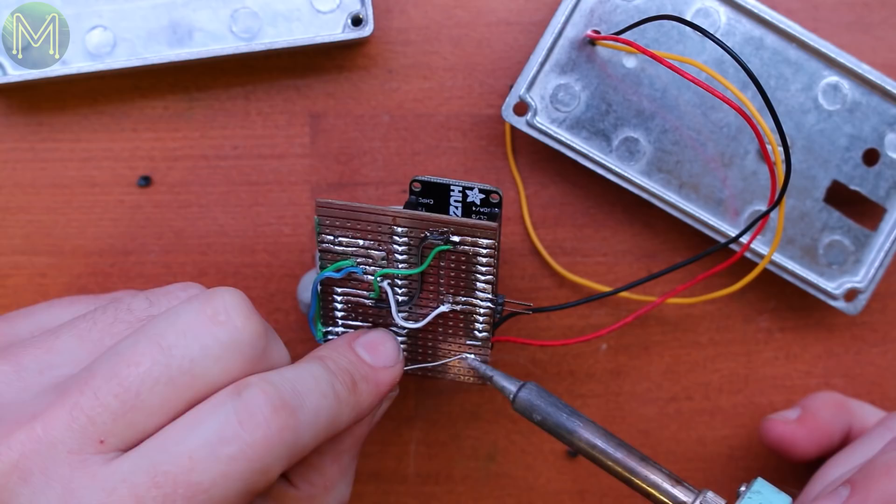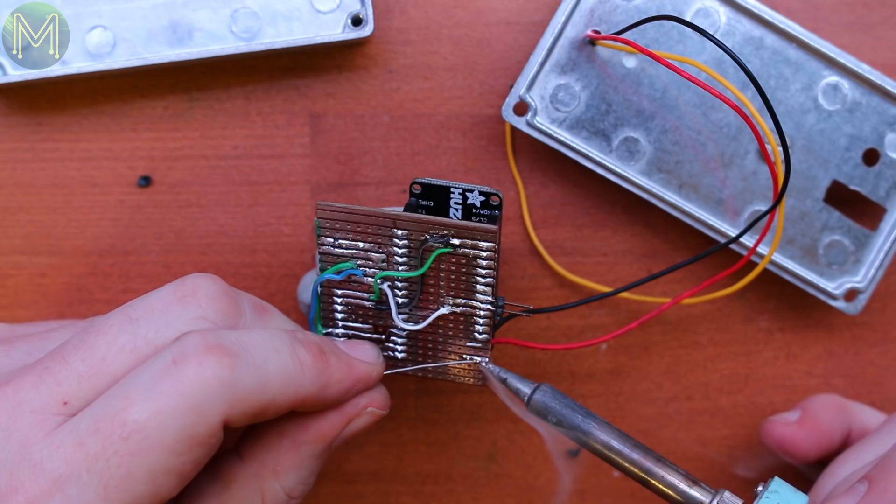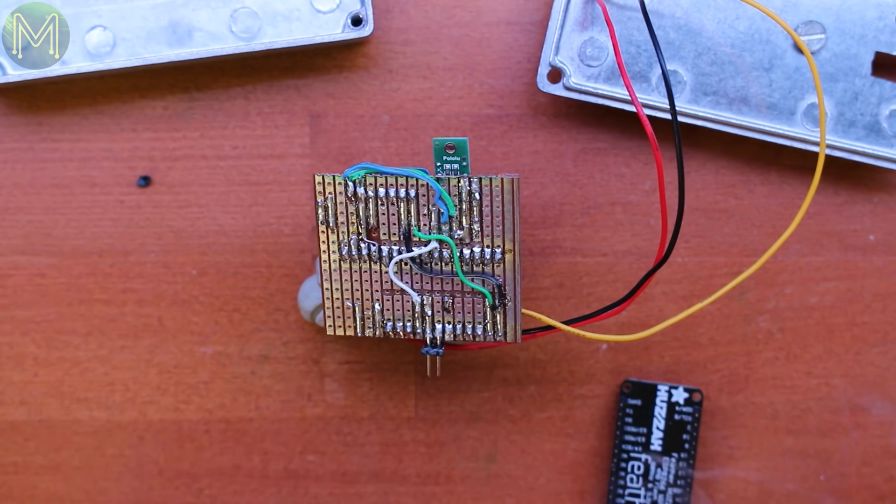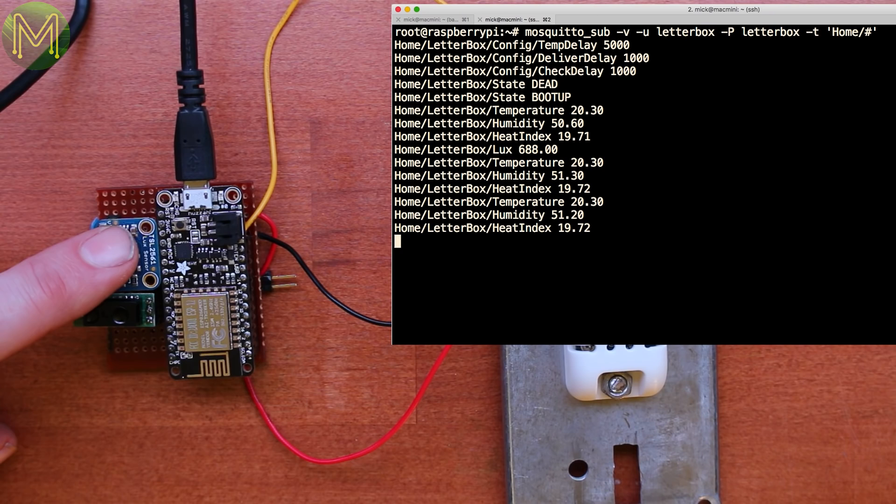Next I'll drop the power and ground for the sensor. And finally the sensor output to GPIO 0 of the ESP. I moved it to GPIO 0 because the lux sensor is now using GPIO 4 as SDA of the I2C bus. Then another round of testing to make sure I haven't broken anything. Yep, all works well. Nice.